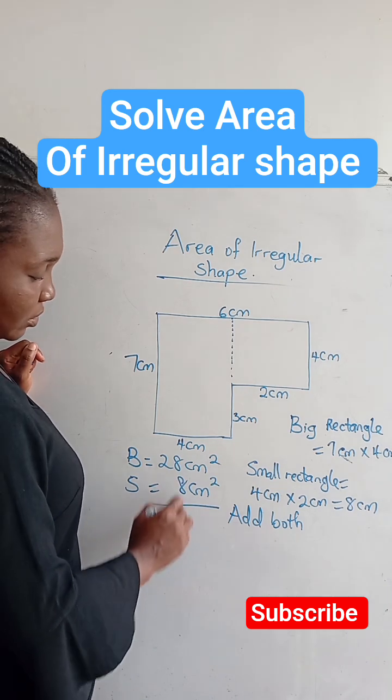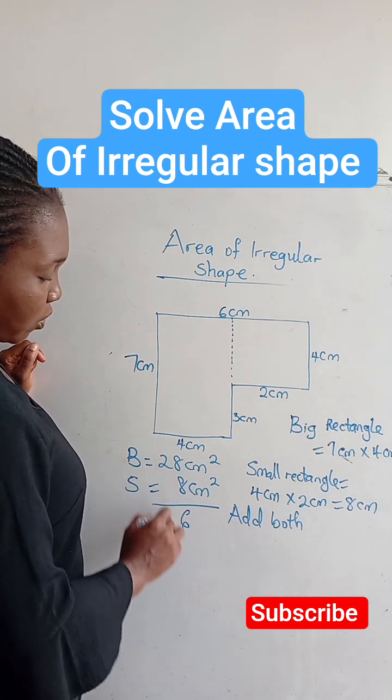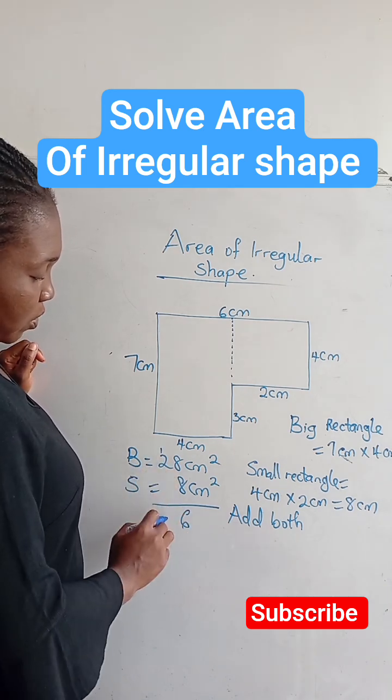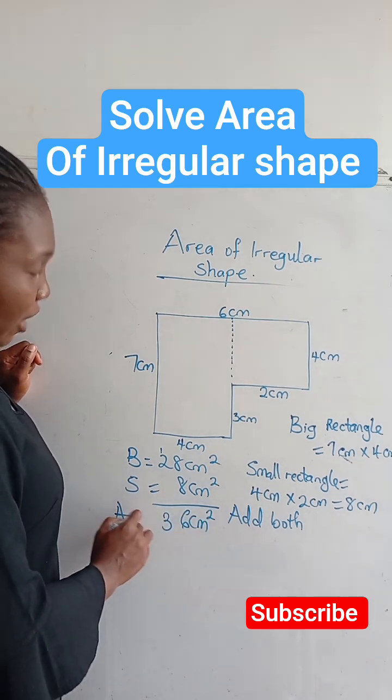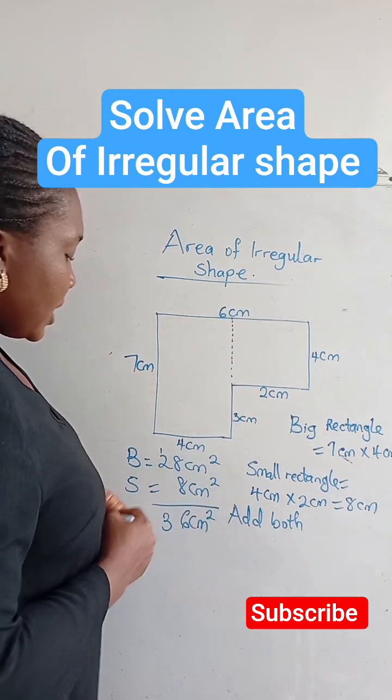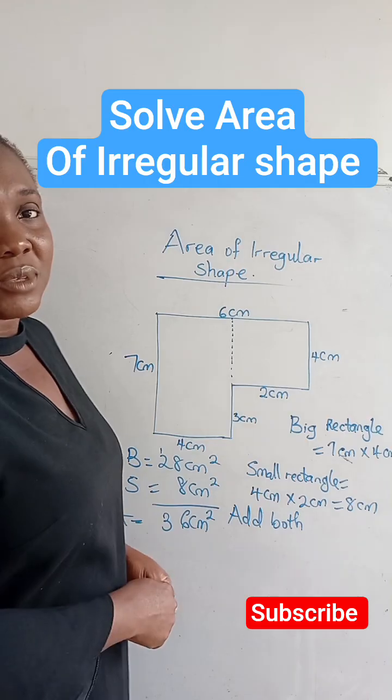So we're going to add together. We have one, six carry one, and here we have three. We have 36 centimeters squared. So the area of this irregular shape is 36 centimeters squared.